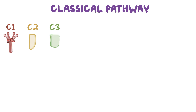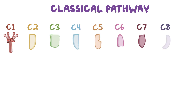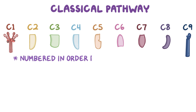So let's start with the proteins that make up the classical pathway: C1, C2, C3, C4, C5, C6, C7, C8, and C9. Part of these proteins are designated with lowercase letters like A or B. These were numbered in the order they were discovered, but not the order in which they function.